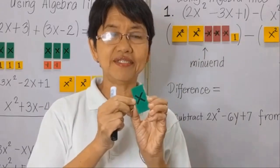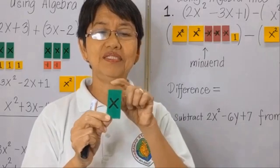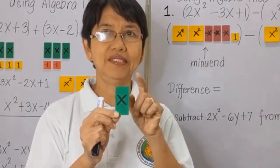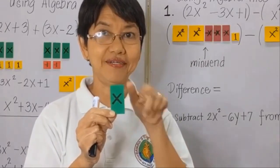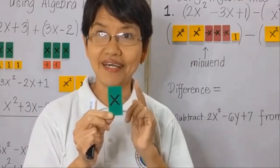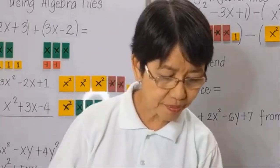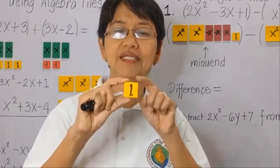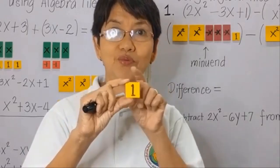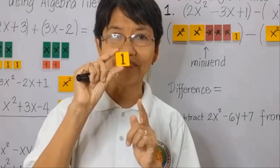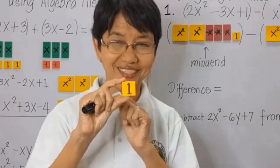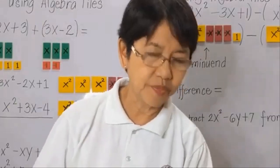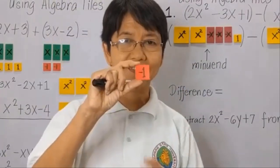Then I have another algebra tile which is 1 inch by x. So this is x times 1. The area of this tile is x. And this is a unit tile because it is 1 by 1. And 1 times 1 is equal to 1. The area of this tile is 1 inch squared. And the negative of 1 is this red tile.